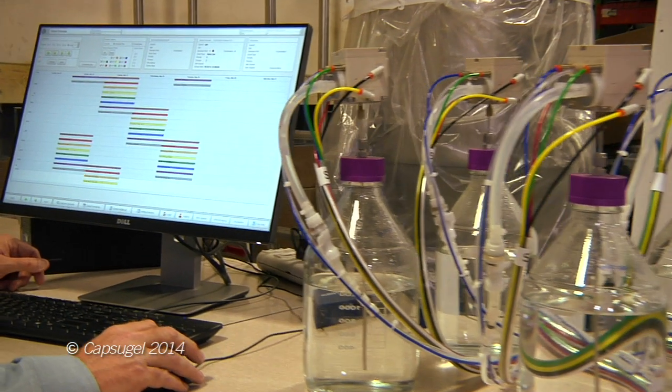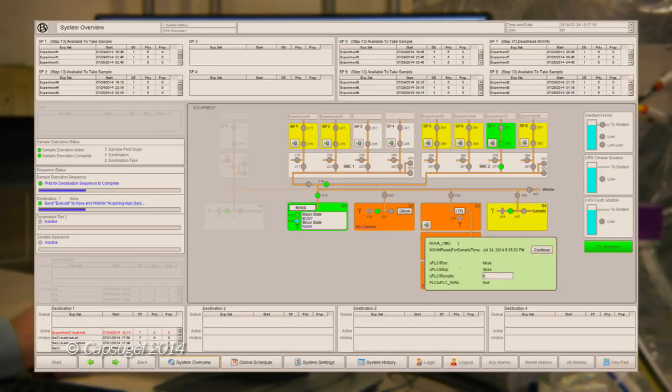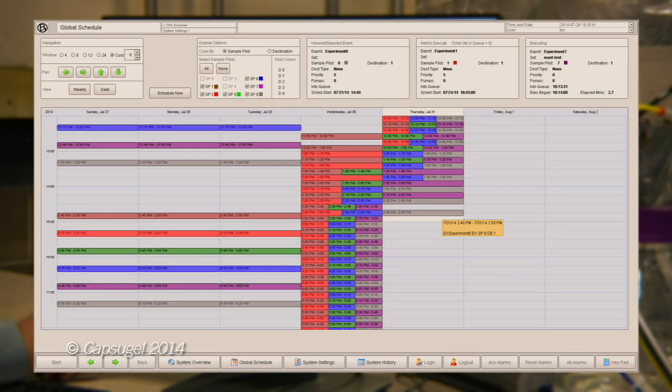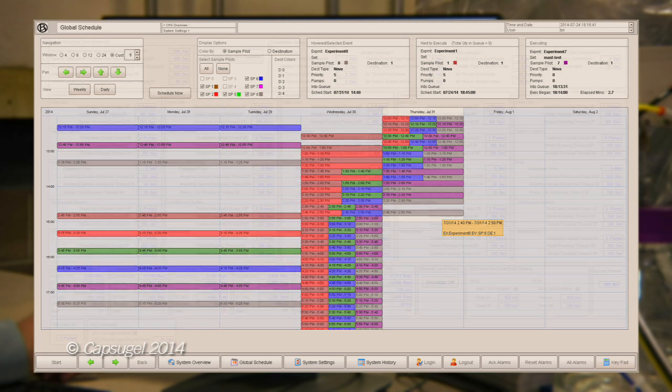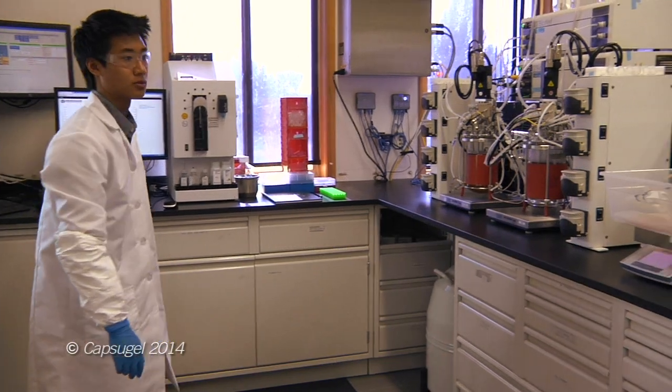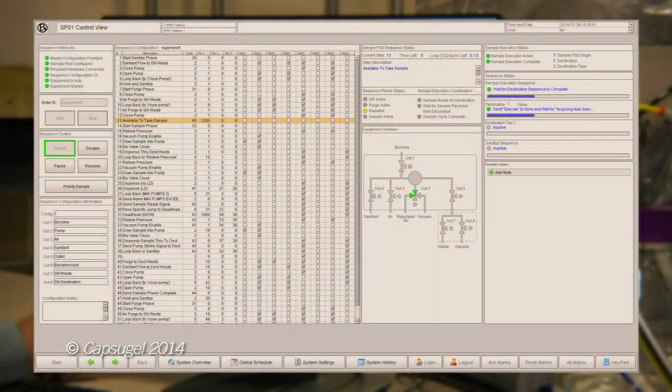With MAST, scheduling sampling activities is straightforward. At a glance, you can see the status of all the sample pilots and the downstream analytical destinations. Using the Outlook style utility, scheduling is easy. With just a few clicks, samples for all the reactors can be created for the entire run. If you like, you can walk up and take a priority sample at any time. Each sample pilot can be enabled independently, allowing the bioreactors to be started and stopped on your schedule.